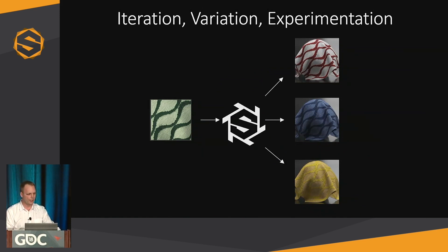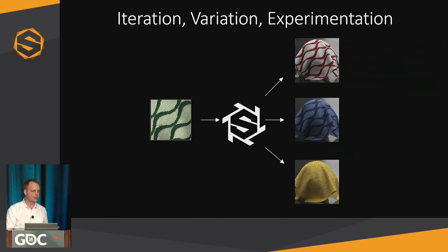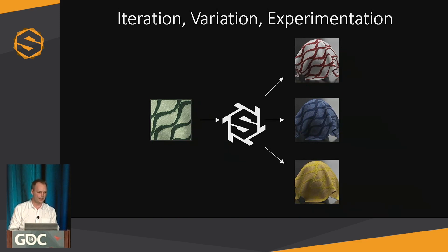Another thing with automation and also proceduralism — at Substance and Algorithmic, proceduralism is a very important thing. Together with automation, it allows you to test out a lot of variations, iterate on stuff, and experiment. Rather than having artists load all their stuff and change parameters and export textures, if you set up things in an automated way, you can make large-scale changes — like changing what the moss looks like on every rock in a game, or how much snow you have on your assets. With proceduralism and automation, you can quickly try out large-scale changes and get the right results.